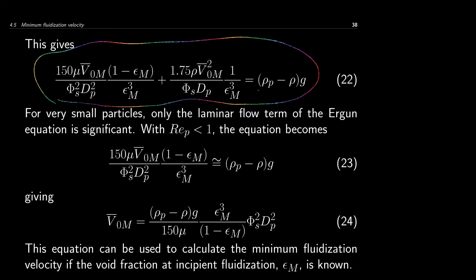The right-hand side contains terms that remain the same — only rho_p and rho, with nothing else. If the flow is laminar, we have only the first term, and from there we can get an expression for the minimum fluidization velocity. That term contains rho_p, rho, epsilon_m, the constant 150, viscosity, epsilon_m, phi_s, and d_p. So it depends only on solid and fluid properties, particle size and sphericity, and the void fraction at minimum fluidization.